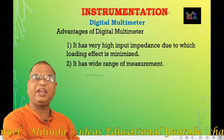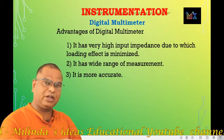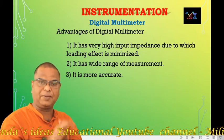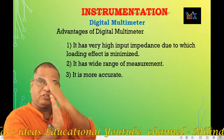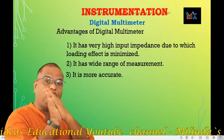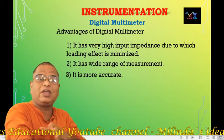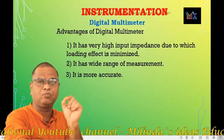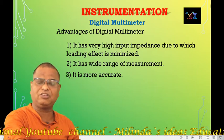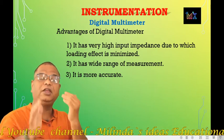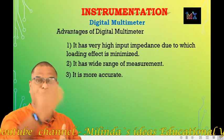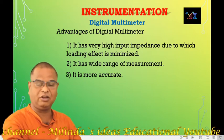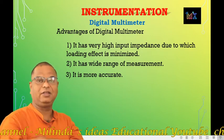Another advantage is that it is more accurate. The readings are displayed directly in discrete numerical form, so there is no need to read a pointer position on a scale. Because of that, errors are reduced and it is more accurate. In contrast, analog multimeters are less accurate.